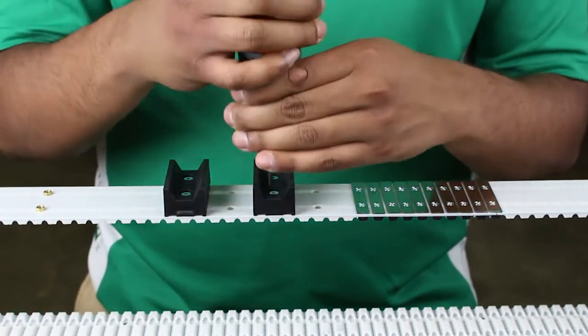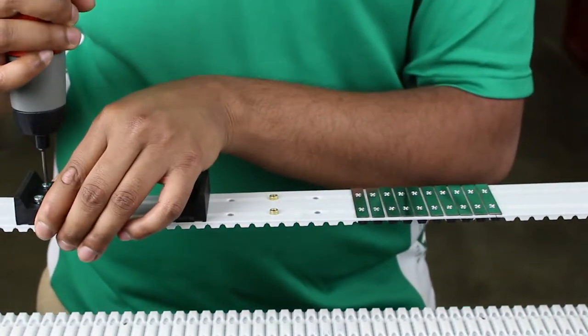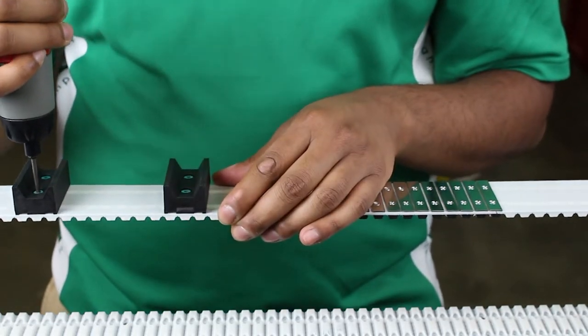You can also easily remove inserts and profiles that have been already put on the belt while your belt is on the machine, and move them around to adjust your profile spacing.